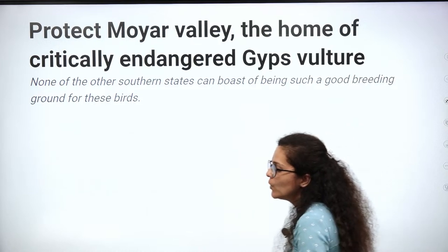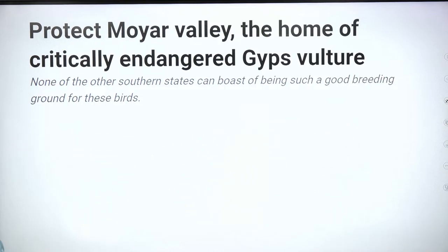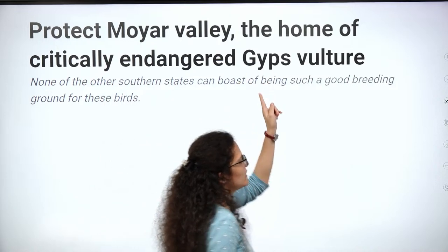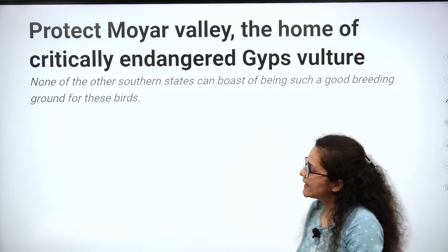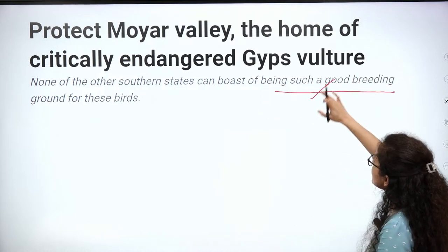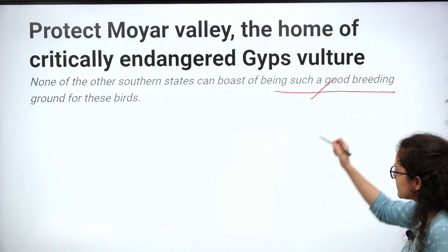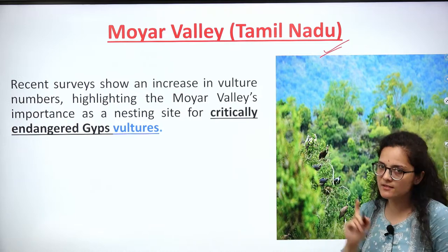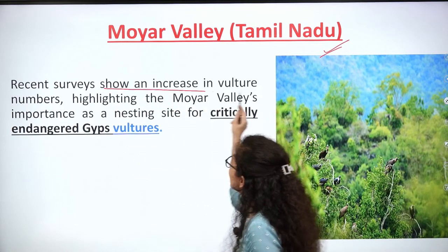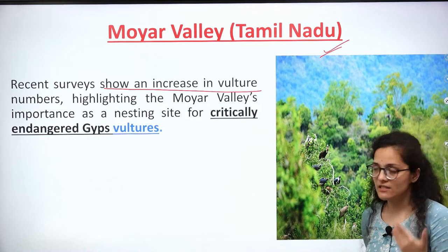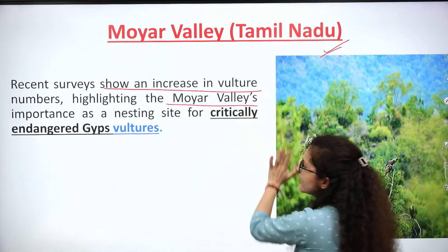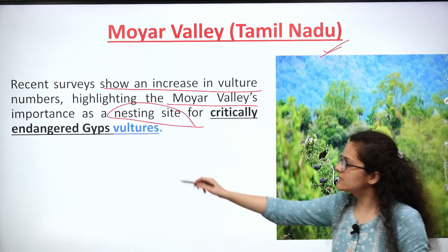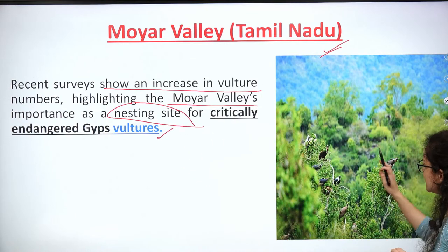The next article discusses protecting Moyor Valley — the home of the critically endangered Gyps vulture. None of the southern states can boast of being such a good breeding ground for these birds. First important point: Moyor Valley is located in Tamil Nadu. A recent survey showed an increment in vulture numbers, highlighting Moyor Valley's importance as a nesting site for the critically endangered Gyps vulture. It is located near Mudumalai Tiger Reserve.